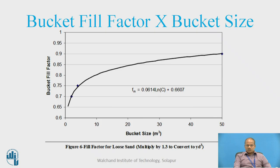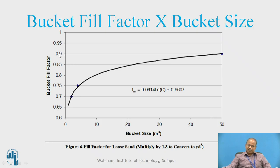This is the chart for bucket fill factor as a function of bucket size. As the bucket size increases from 0 m³ to 10, 20, 30, 40, 50 m³, the respective fill factor keeps on increasing, which means that a larger bucket has a better bucket fill factor. This is a typical chart developed for loose sand; for different materials this chart keeps on changing. This is just a sample shown for our information.